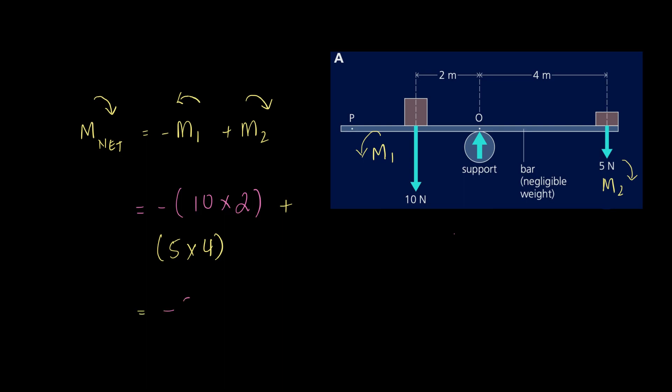So the net is 5 times 4, that's minus 20 Newton meter and then we have plus 20 Newton meter. The net moment on the object is zero, so this seesaw is balanced or in equilibrium. It's completely balanced.